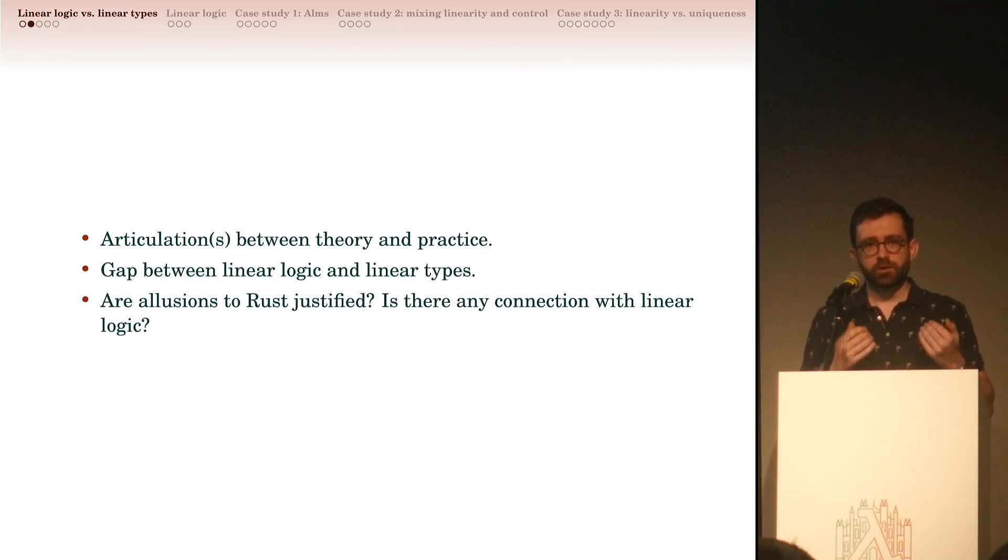What I want to share in my talk is my view about articulations between theory and practice. I have the impression that there is some gap between the modern view on linear logic and linear types. And the last question is: many of us want to see an analogy between Rust and linear types. Is this analogy justified? Is there any connection with linear logic?